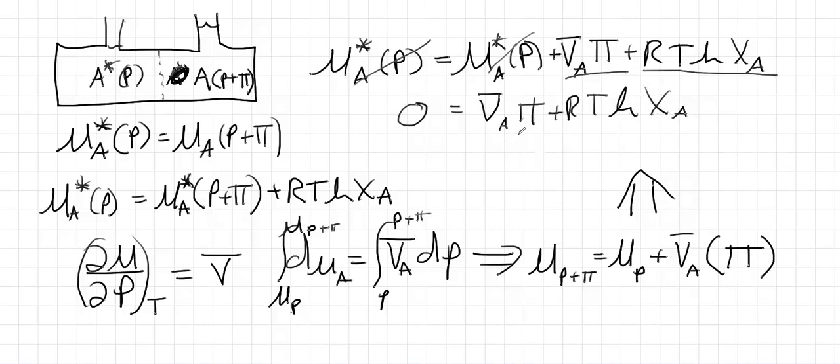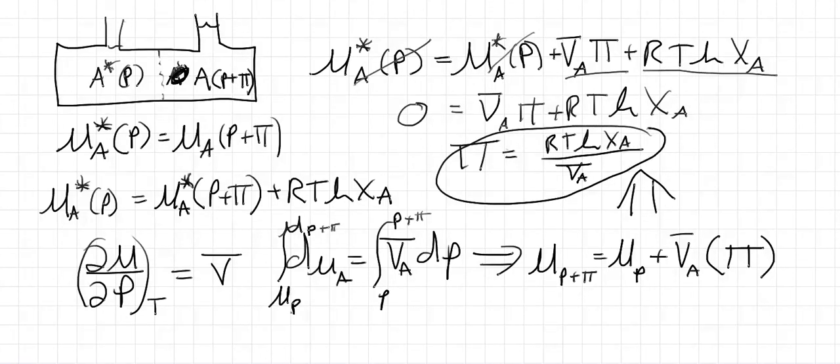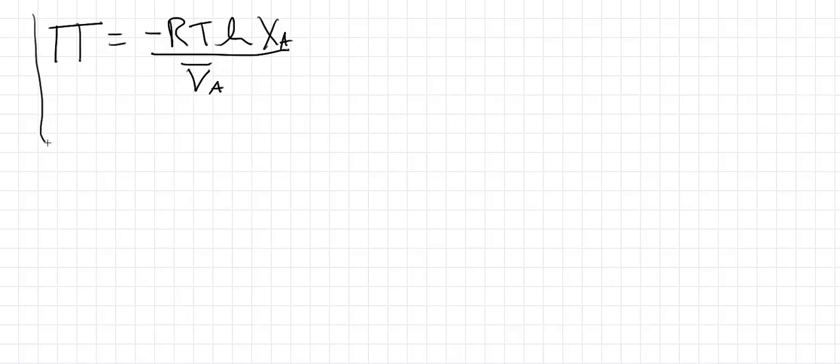So zero is equal to the molar volume of A times pi, plus RT log of X_A. And then we can then solve for pi. We can get pi is just going to be equal to, the osmotic pressure pi is just going to be RT log X_A over the molar volume of our solvent, A. And let's go ahead and rewrite this on the next page really quickly. So we get pi is equal to minus RT log of X_A over the molar volume of A. And we did assume ideal solution behavior when we wrote this or when we derived this. So we better write that here that this is for ideal solutions.